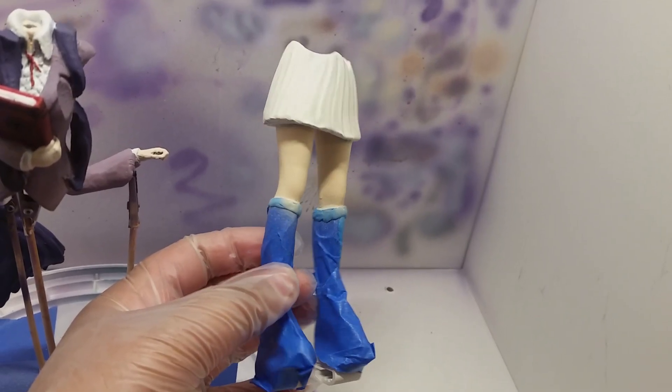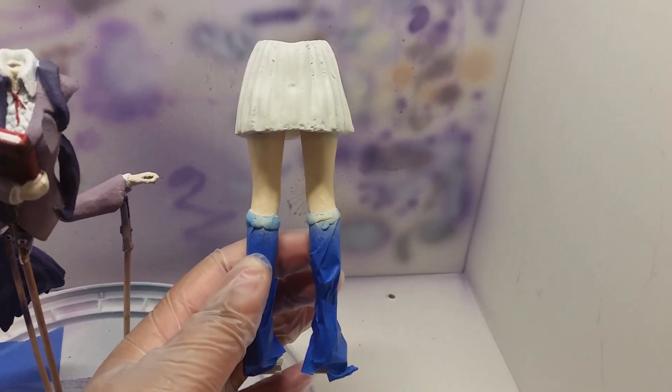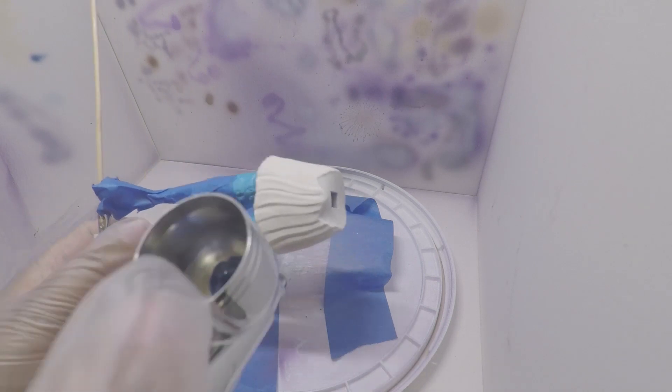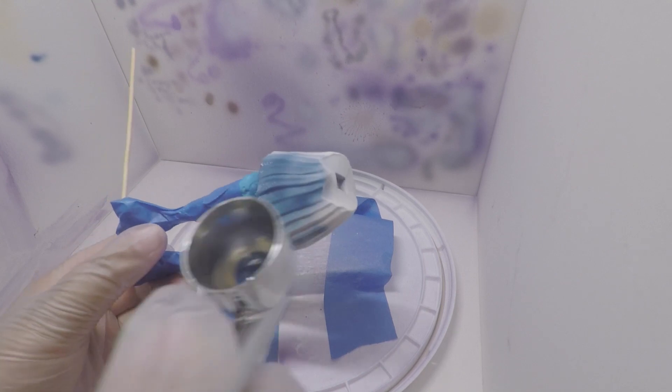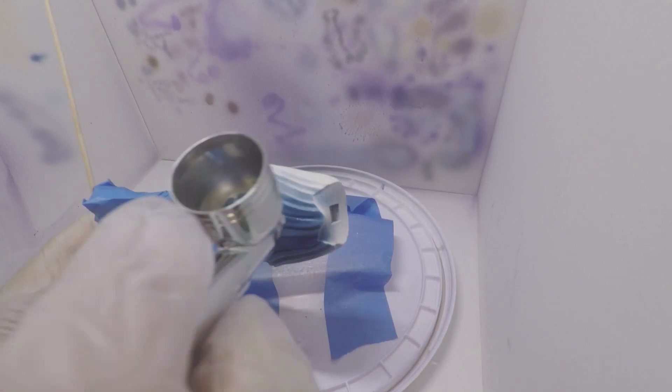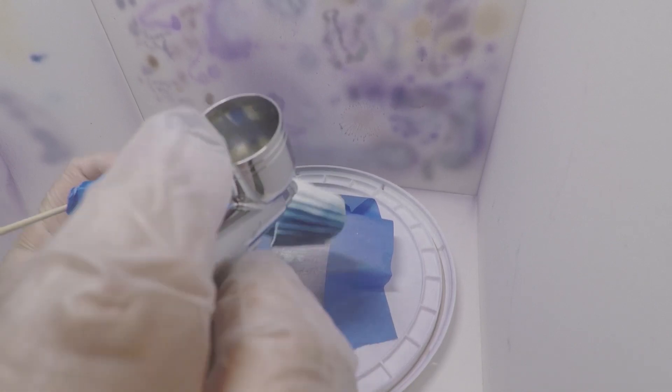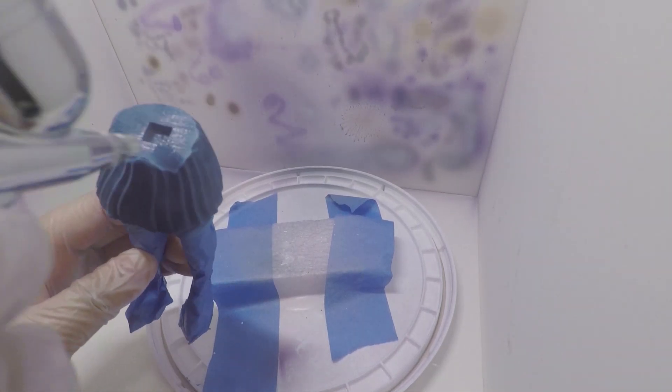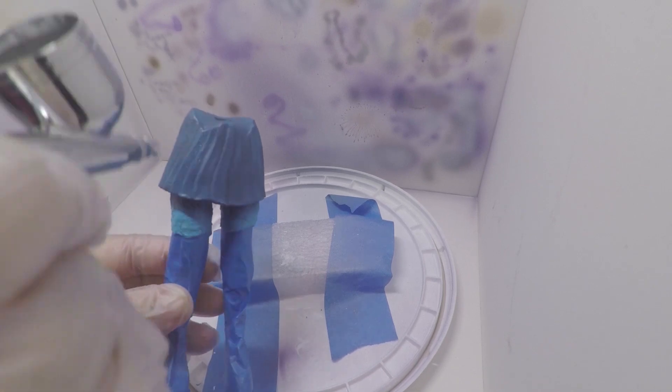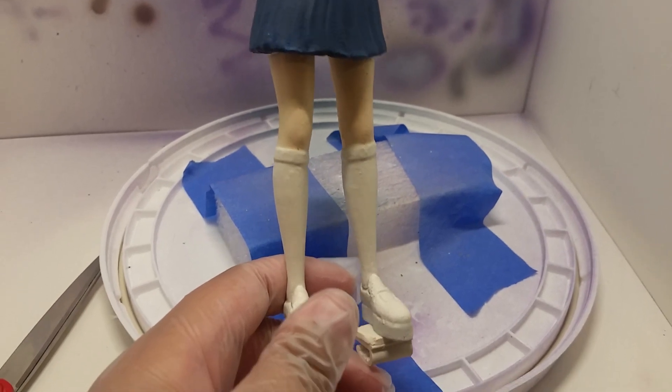Here's how the legs turned out after removing the masking from the skirt. This camera picks up the color a little bit better. I then masked off the rest of Yuri's legs and began to paint her skirt.